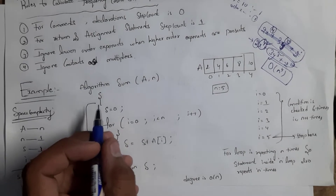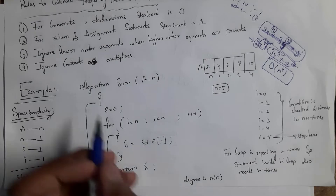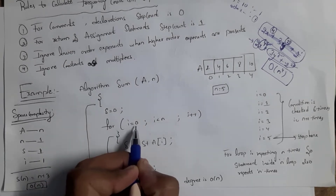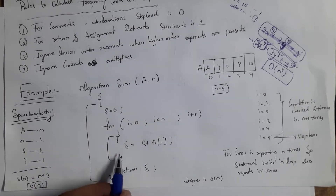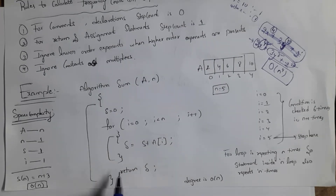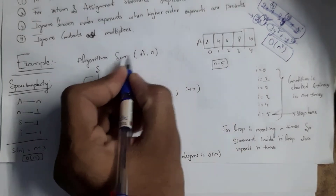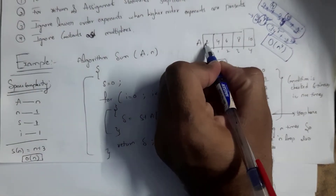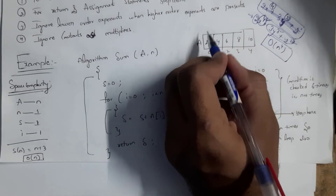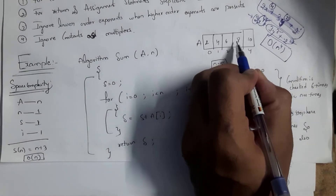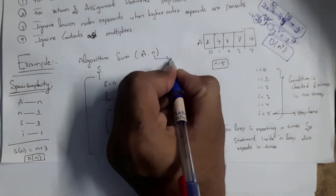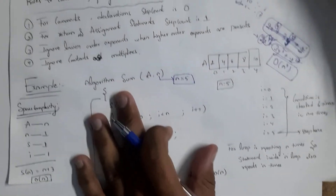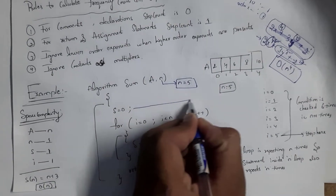In this example, we will calculate time complexity using the frequency count method. The algorithm is Sum(a, n): s equal to zero, for i equal to zero, i less than n, i plus plus — inside this, s equal to s plus a[i] — and at last we return s. Here a is an array, for example: two, four, six, eight, ten — five elements, so n equals five. For the assignment statement s equal to zero, step count is one.